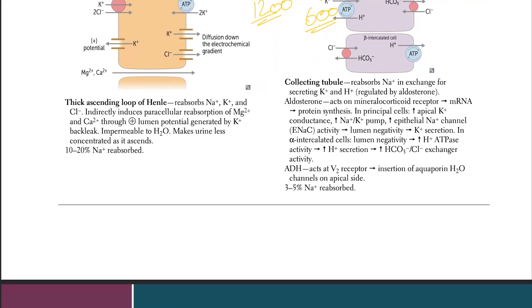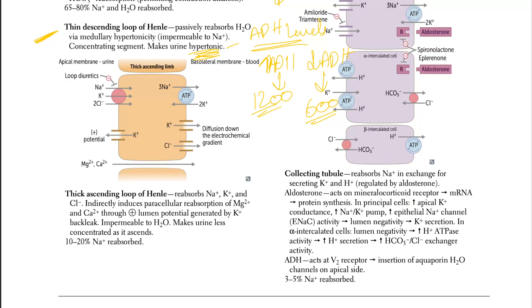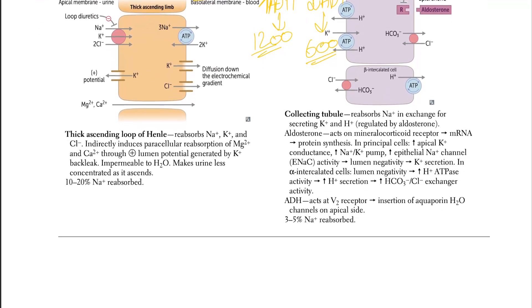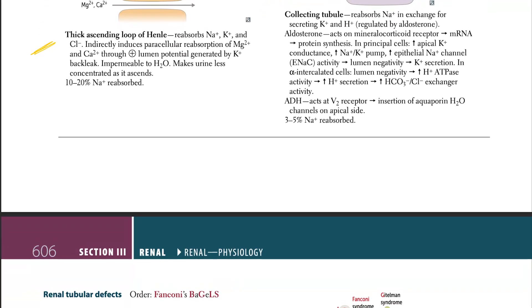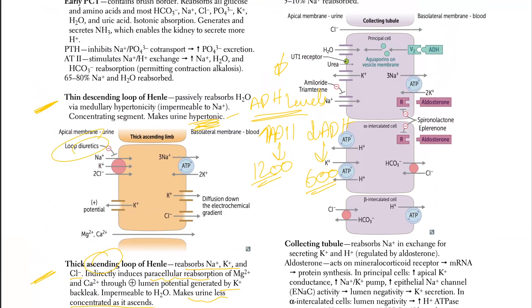Let's move on with the thick ascending loop of Henle. So it reabsorbs sodium and potassium and chloride indirectly induces paracellular reabsorption of the magnesium and calcium through positive lumen potential generated by potassium back leak impermeable. Now here's the difference you have. This is impermeable to water. The ascending one is impermeable to water makes urine less concentrated as it ascends. 10 to 20% sodium reabsorbed at this stage. Let's now, so that's the mechanism where you have the loop diuretics act on this thick and thin ascending limb by moving on to the DCT.